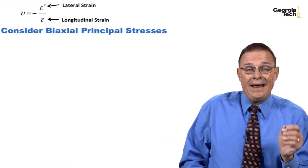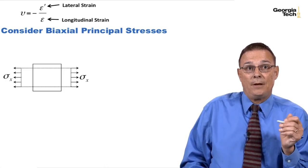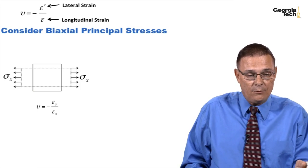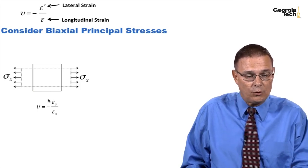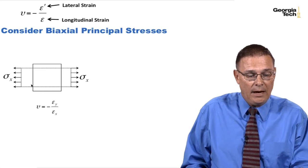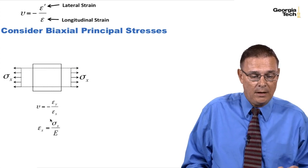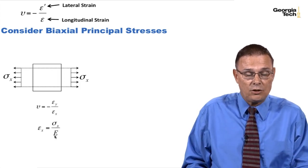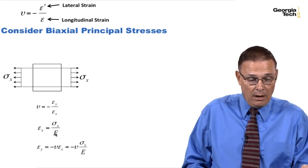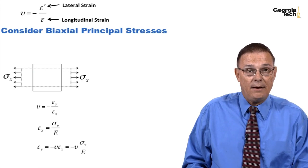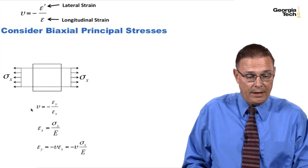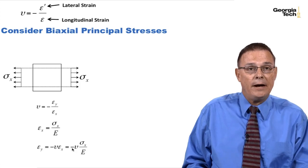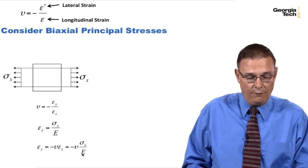We are now going to consider biaxial principal stresses. Let's first stress it in the x direction. For the stress in the x direction, Poisson's ratio says the lateral strain will be the strain in the y direction and the longitudinal strain is in the x direction. Epsilon x is by Hooke's Law sigma x divided by Young's modulus. Similarly, epsilon y is minus Poisson's ratio times epsilon x, and substituting in gives epsilon y equals minus Poisson's ratio times sigma x divided by Young's modulus.